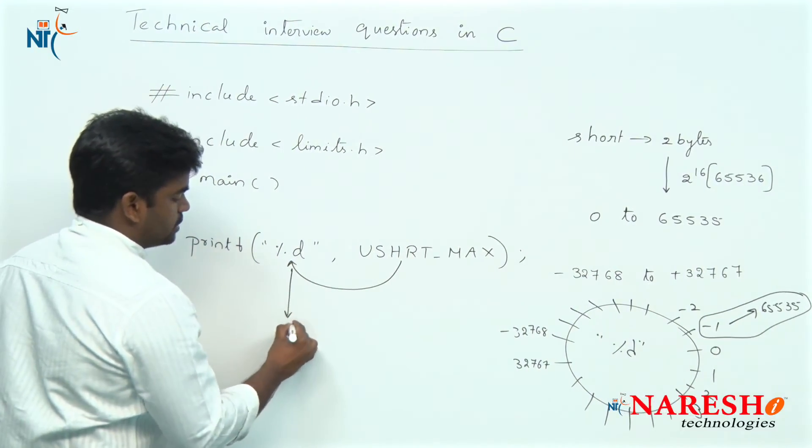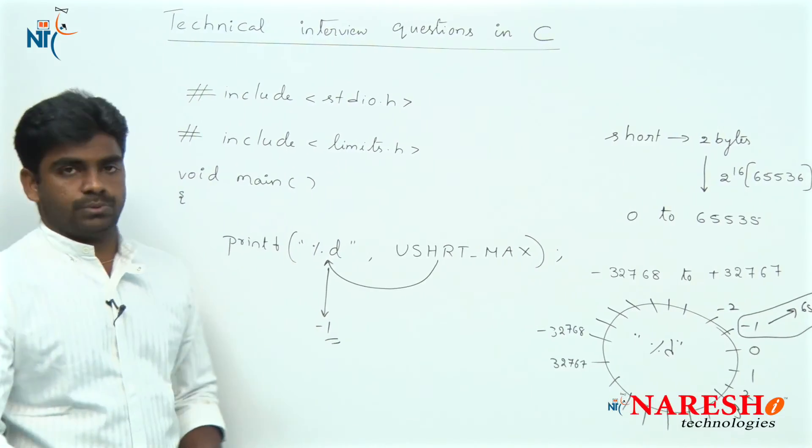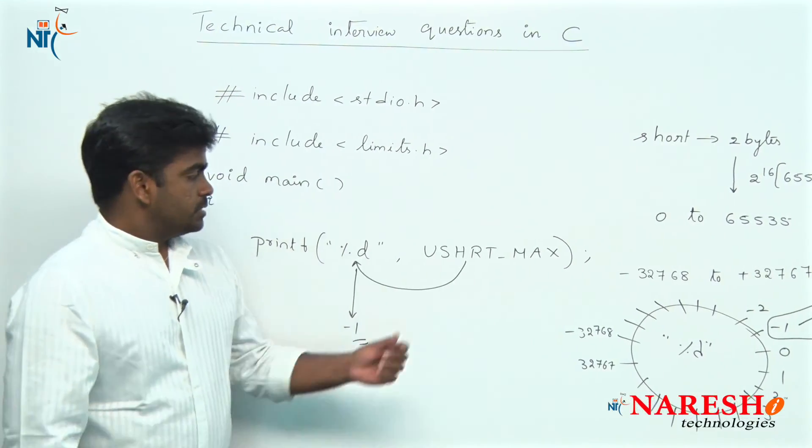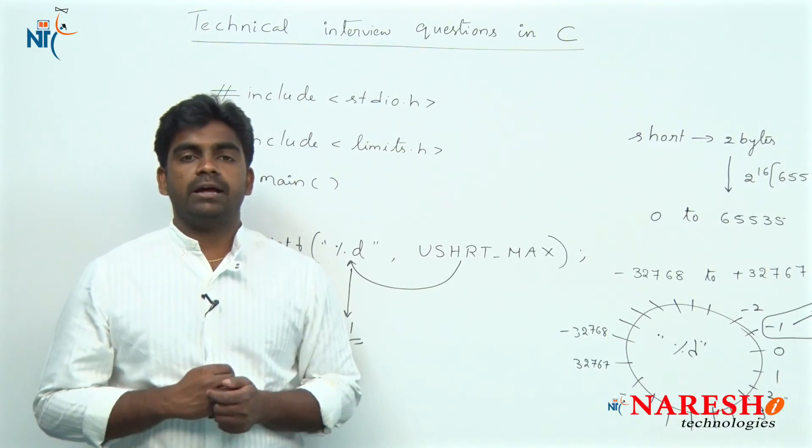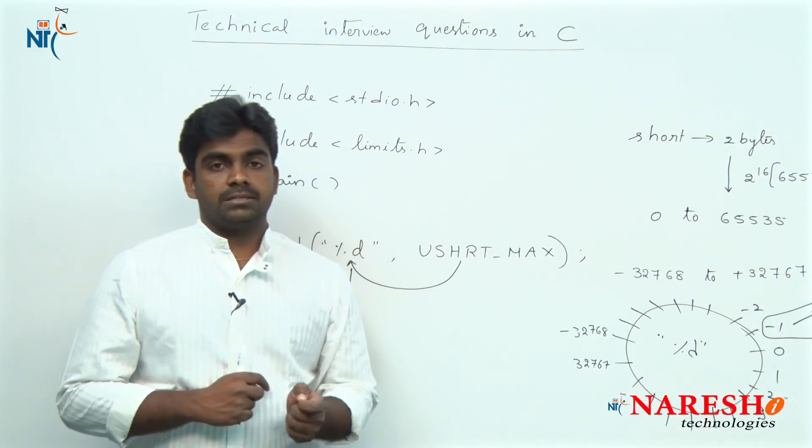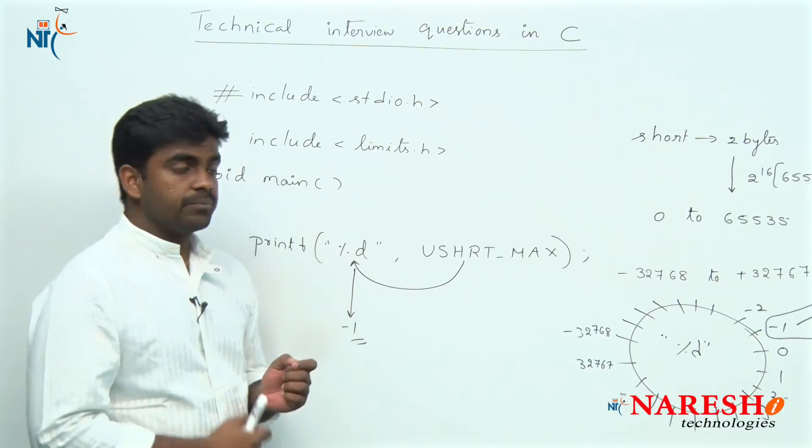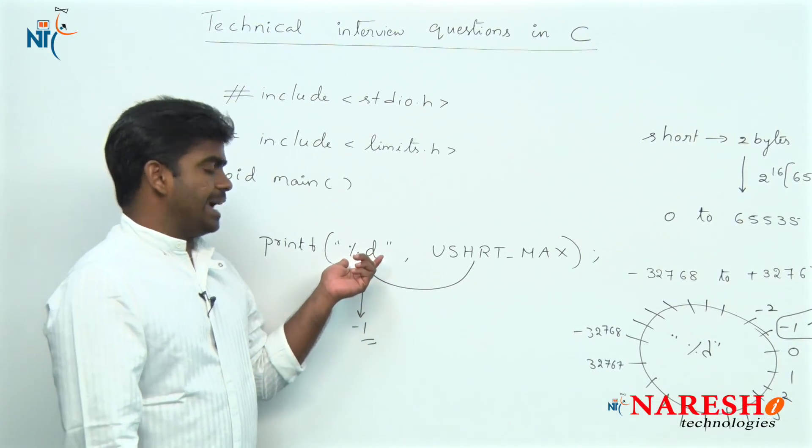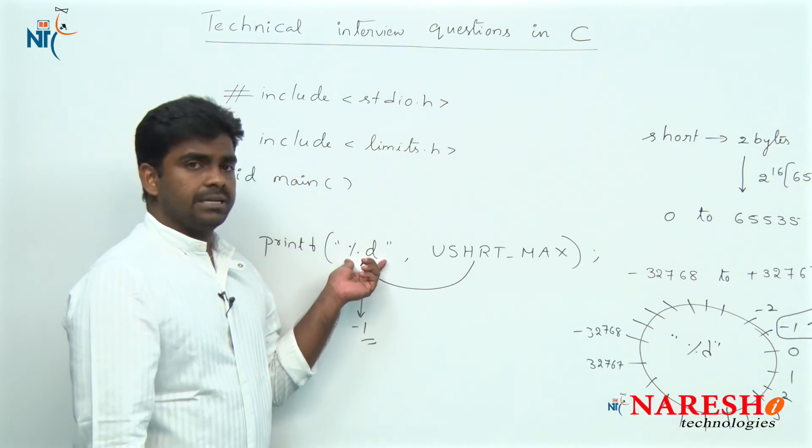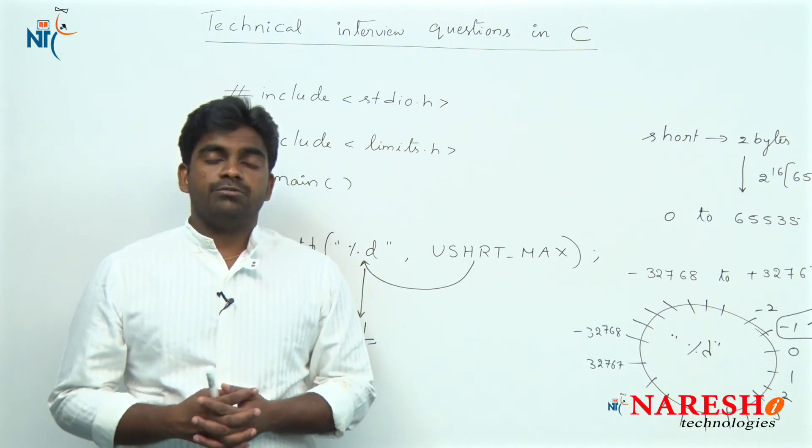In place of that 65,535 it is printing minus 1. The result of this program is minus 1. USHRT_MAX is printing the maximum value we can store into unsigned short integer variable that is 65,535, but while printing we have given another format specifier, percentage d, which is a signed short format specifier.